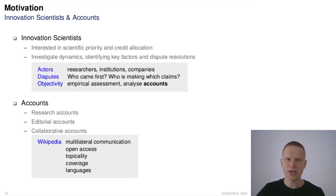Wikipedia as an account is interesting to innovation scientists owing to the fact that, unlike research and editorial accounts, the publication process is not one-sided but multilateral. Wikipedia is openly accessible, up-to-date, covers a wide range of topics and is available in multiple languages.